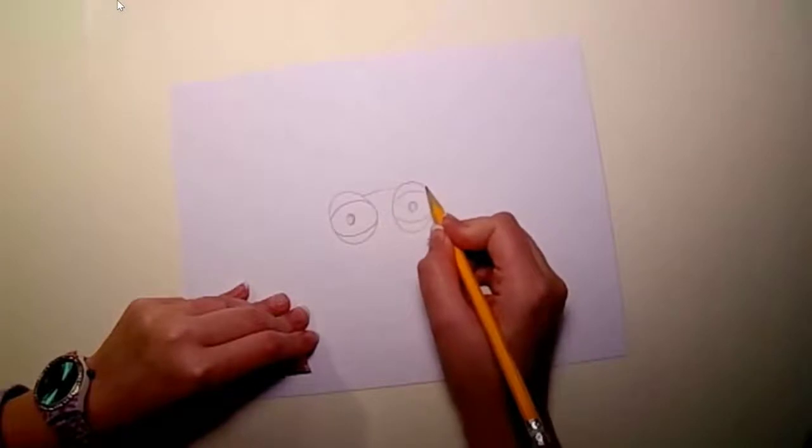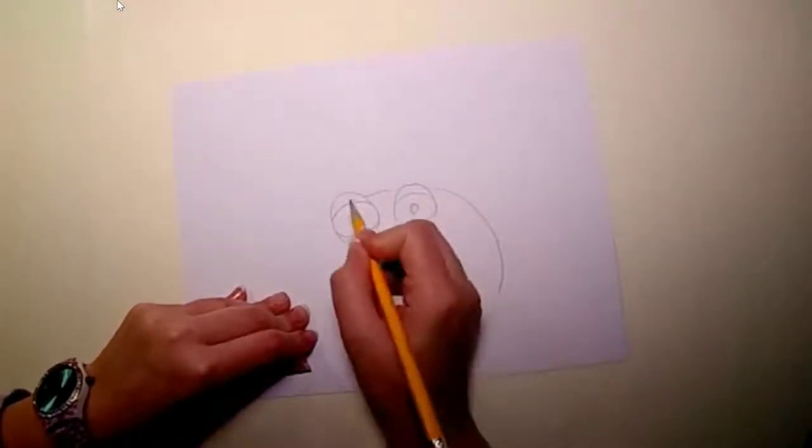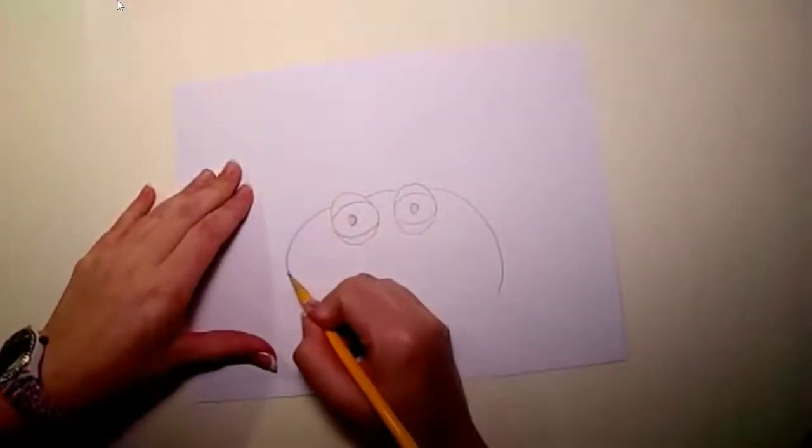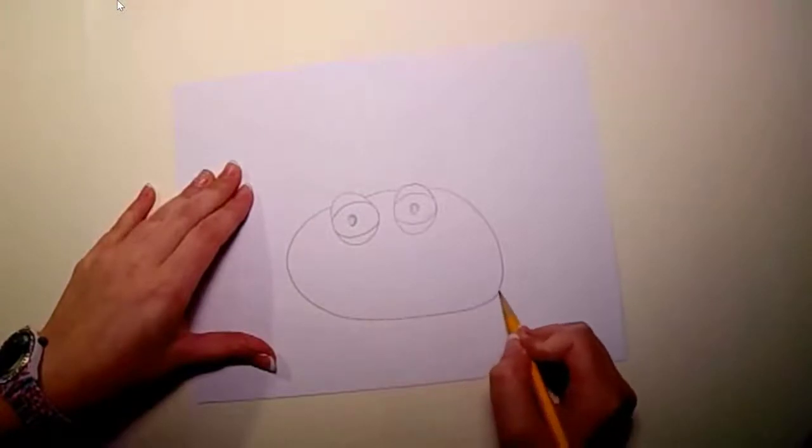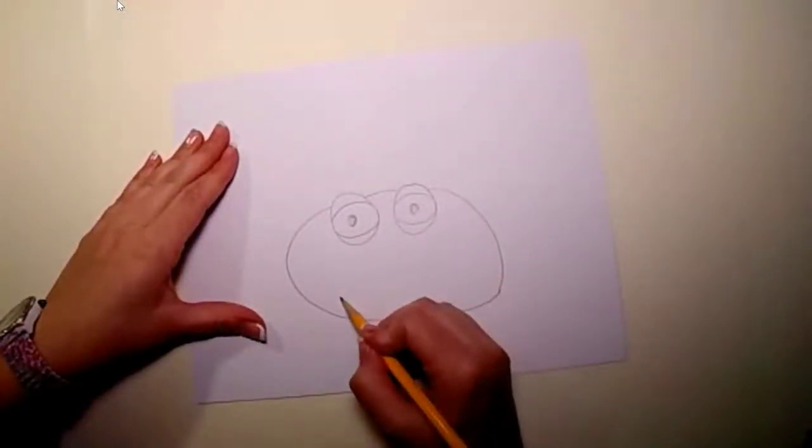Now for the shape of his face we will be using an oval, and the oval is going to be kind of a squished flattened oval. He is not holding himself up very well.